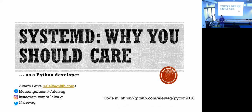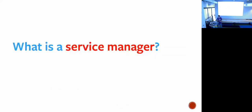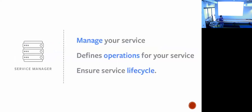How many of you have interacted with systemd or know what it is? So, systemd is a service manager. We have to ask ourselves: what is a service manager? A service manager is basically something that should manage your service. That means systemd is not uWSGI, it's not Django — it's the thing that makes Django run. In your service manager, you define operations like start and stop. Also, if you have a Django application that needs to start slightly after your Postgres application is already on, it's your service manager that is supposed to do this.